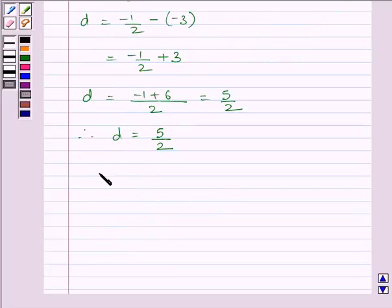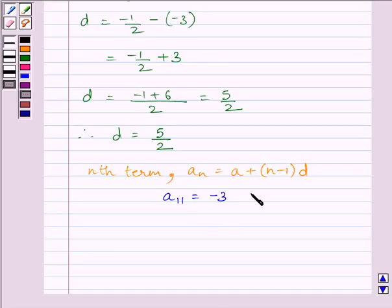Now the nth term of the AP a_n is given by a + (n-1)d, where a is the first term of AP and d is the common difference. Now we have to find the 11th term. So we can write a_11 = -3 + (11-1) × 5/2, as d = 5/2. We have substituted the value of a, n, and d in this expression.